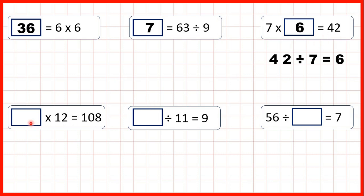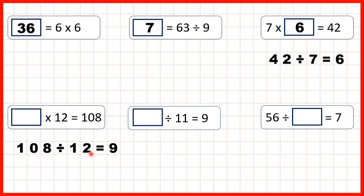Now we have something times 12 equals 108. Again, because it's a missing number multiplication, we can use division to find our missing number. 108 divided by 12 is 9, so 9 times 12 is 108.